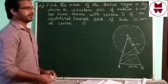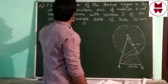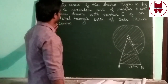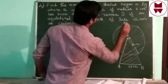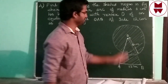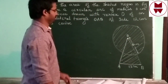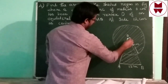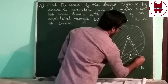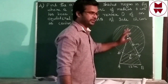Now Question 4: Find the area of the shaded region in the figure, where a circular arc of radius 6 cm has been drawn with the vertex of an equilateral triangle OAB as center. One side of the equilateral triangle is 12 cm. We label the points A, B, C, D, E, L. We have to find the area of the shaded region.